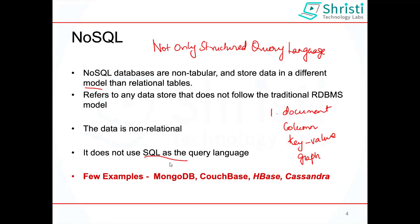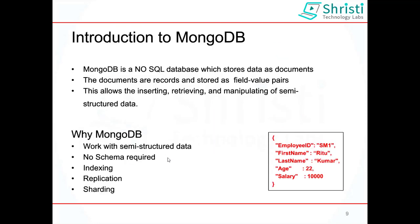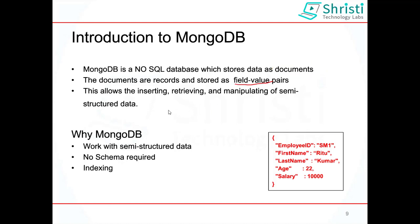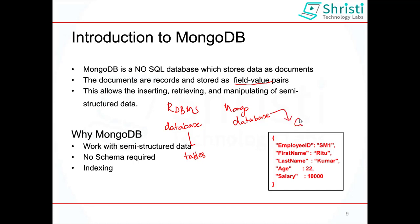Now let us get an introduction to MongoDB. MongoDB comes under document-oriented database, where data is stored in the form of documents. Each document is called a record. The document stores data as key-value pairs. Comparing with RDBMS: in RDBMS, a database is a collection of tables. In MongoDB, a database is a collection of collections.